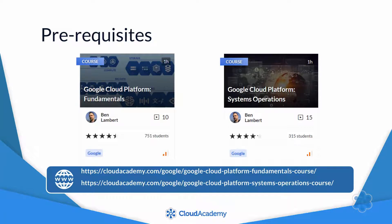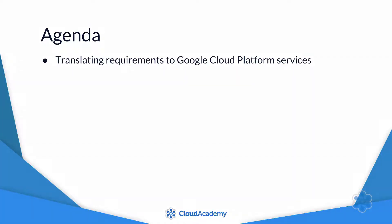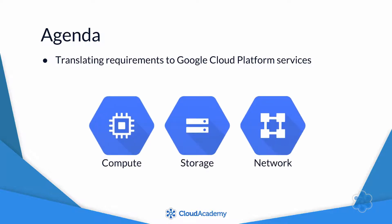In this course, I'll be showing you how to use these building blocks to construct an enterprise-class application architecture. We're going to use a case study as an example of how to apply enterprise principles to a design. I'll start by explaining how you would take an organization's requirements and translate them into the appropriate compute, storage, and network components in Google Cloud.